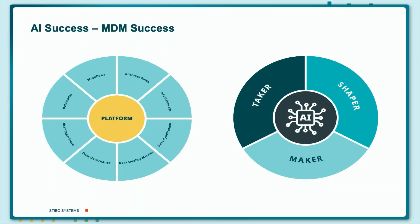On the left hand side you see what our platform can do: a powerful platform, one solution with workflows, business rules, flexible data models, and data governance — all combined in one solution — and all this can help to thrive AI efficiency. On the right hand side you see different approaches. You see the taker — most of you are maybe a taker, connecting to any kind of artificial intelligence system to use it. Or you are a shaper, fine-tuning something, feeding your own large language model with data you have when your master data management system is in place. Or are you the maker? The guys where large language models are not enough and you're building your own AI on top.